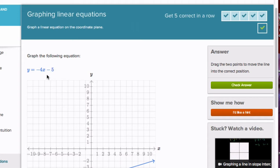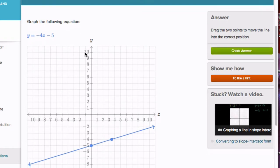Well, when you have an equation like this, y = -4x - 5, this number right here, -5, that's your y-intercept. That's where our line should cross the y-axis. So in this one, I'm just going to drag one of the points to the y-intercept, and then I'm going to use my slope to find my next point.